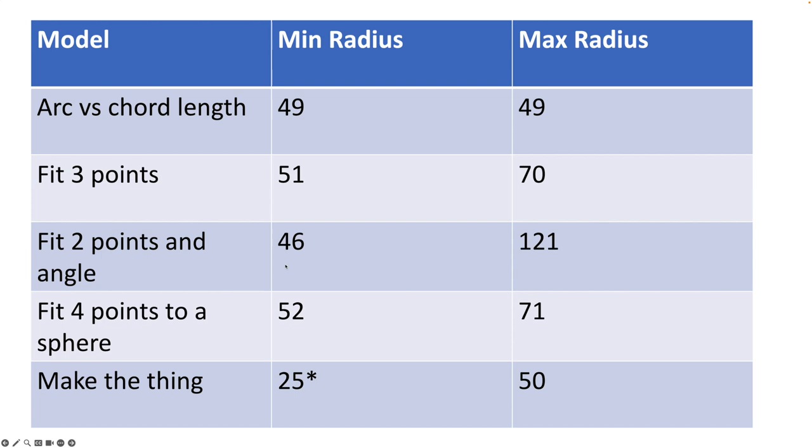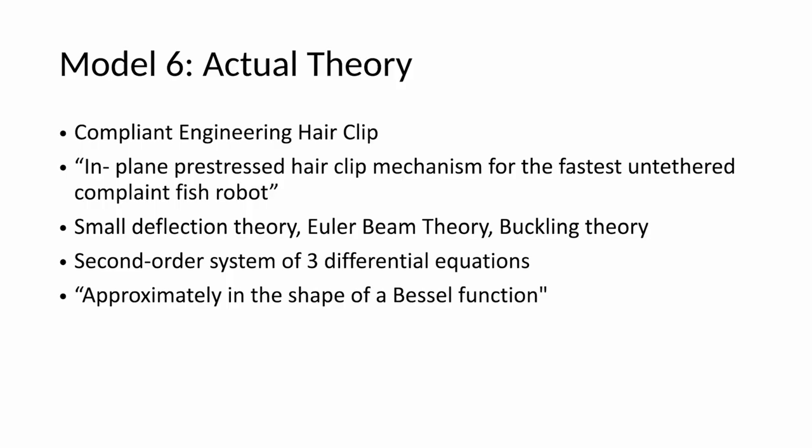So seems like the problem's all sorted out, except it's not. There is a paper that was written called In-Plane Pre-Stressed Hair Clip Mechanism for the Fastest Untethered Compliant Fish Robot. And I assume it's a good paper. I don't understand it, but it used small deflection theory and Euler beam theory and buckling theory. Overall, it came up that the shape is approximately that of a Bessel curve. It used a system of second order differential equations, three equations, to solve this. And maybe that's what I'm going to spend the next couple of months learning about. We'll see.